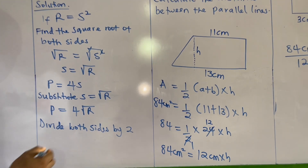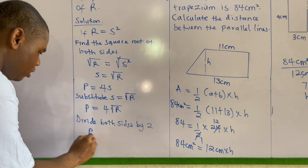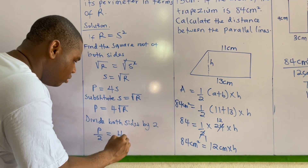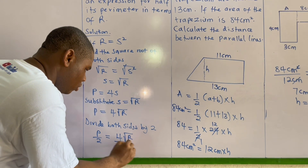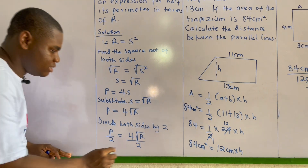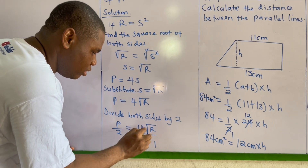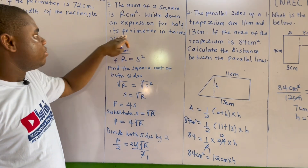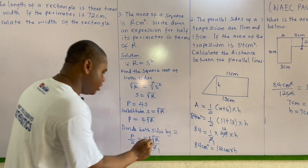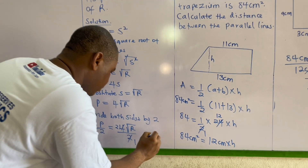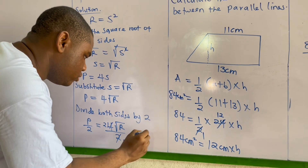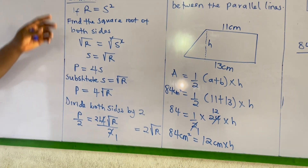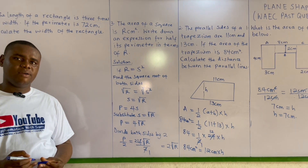So P over 2 equals 4 root r over 2. Since 2 goes into 4 twice, half the perimeter equals 2 root r.